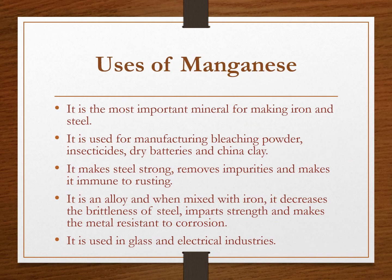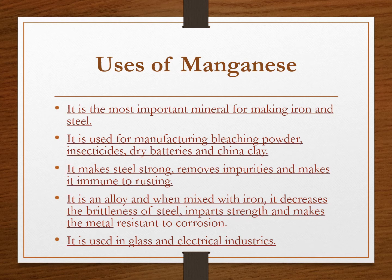Manganese has a variety of uses. It is the most important mineral for making iron and steel. Nearly 9 kg of manganese is required for manufacturing one ton of steel. It is used for manufacturing bleaching powder, insecticides, dry batteries, and china clay. It makes steel strong, removes impurities, and makes it immune to rusting. When mixed with iron, it decreases the brittleness of steel, imparts strength, and makes the metal resistant to corrosion. It is also used in glass and electrical industries.